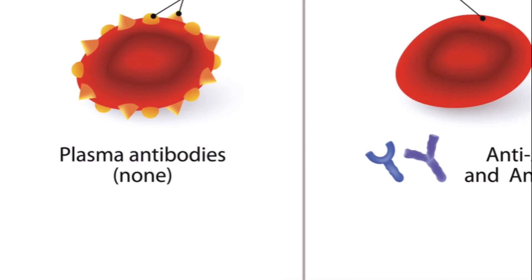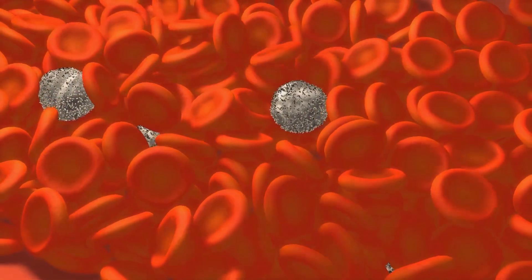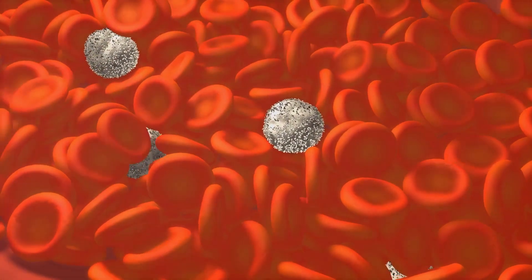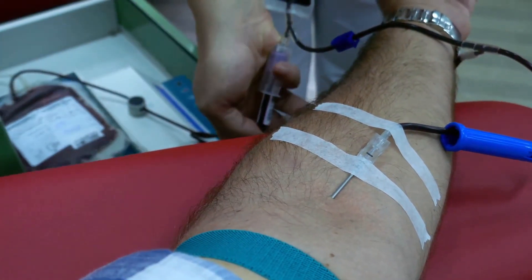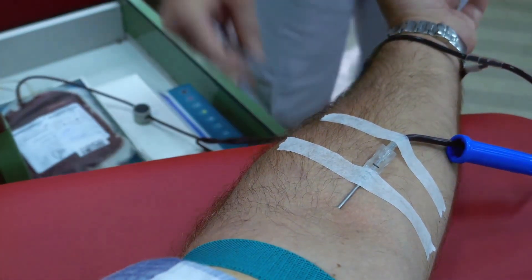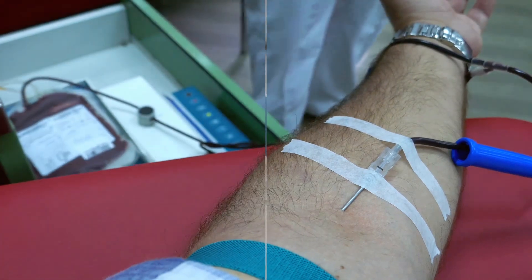Blood type AB has both A and B antigens on the red blood cells but no antibodies in the plasma. Blood type O has no antigens on the red blood cells but both anti-A and anti-B antibodies in the plasma.